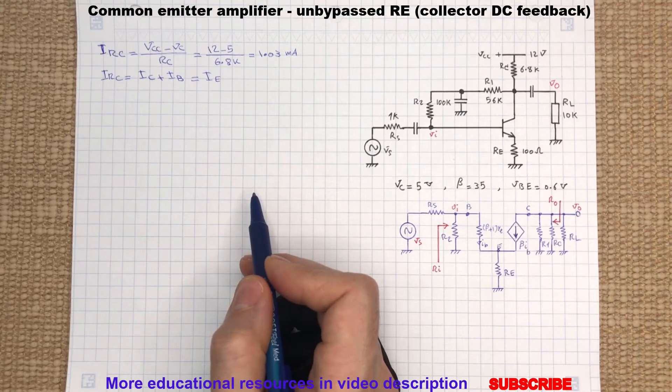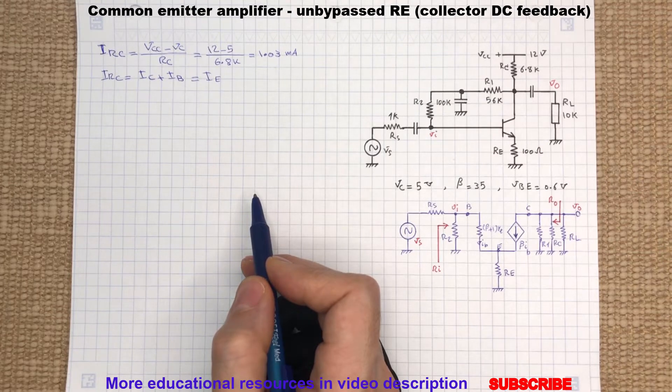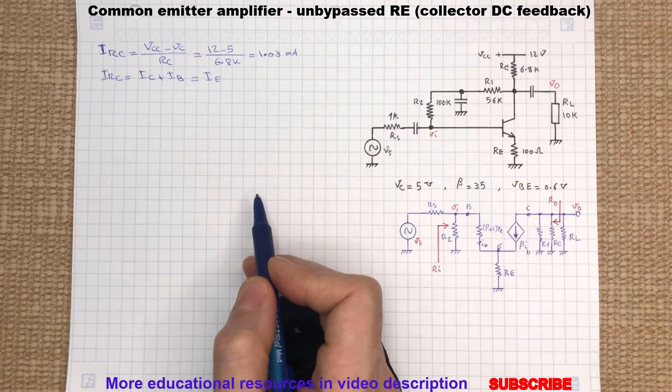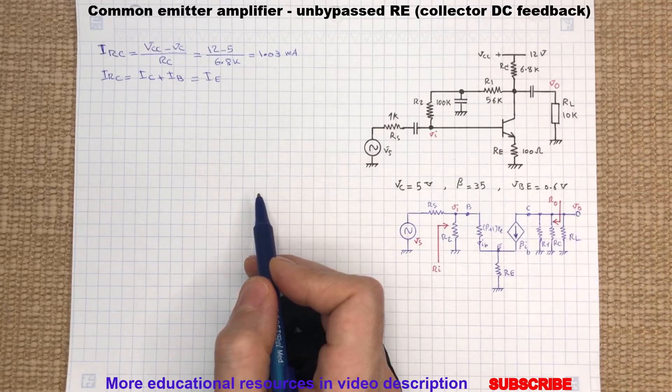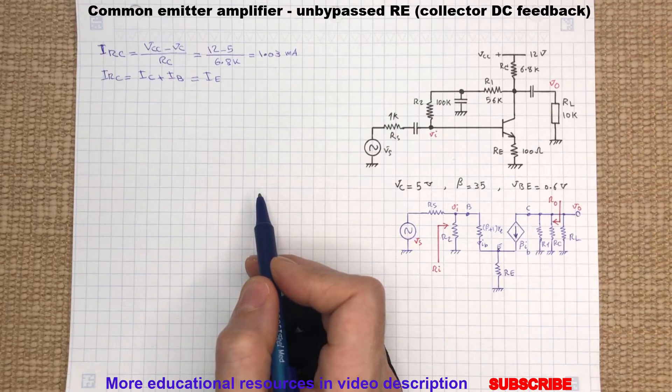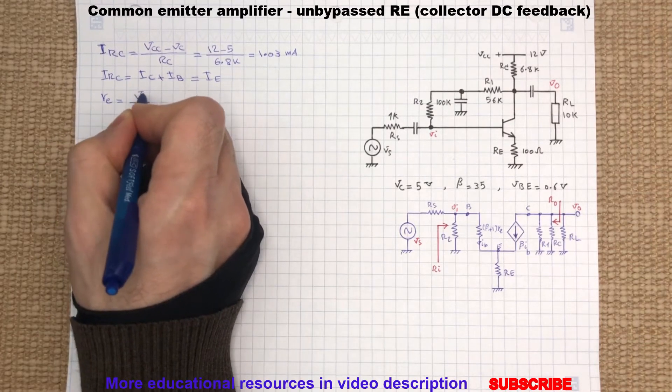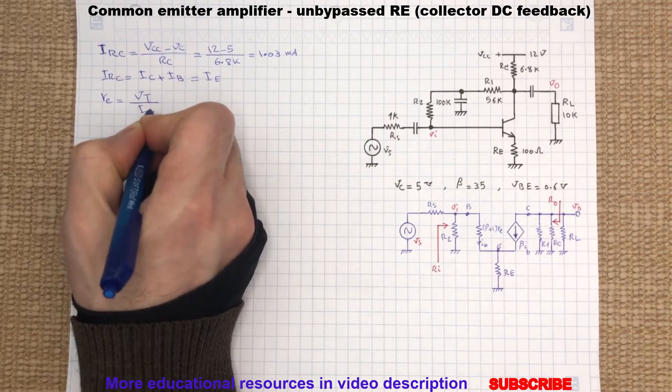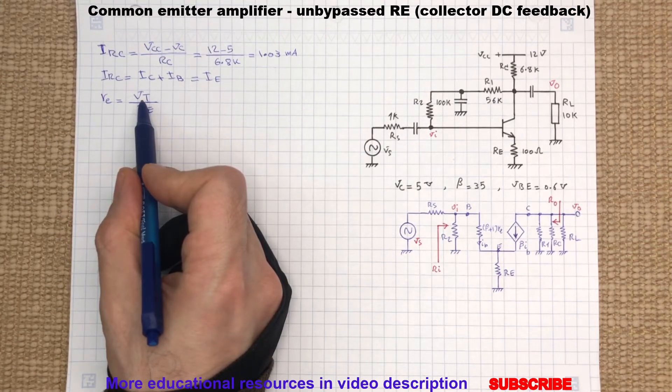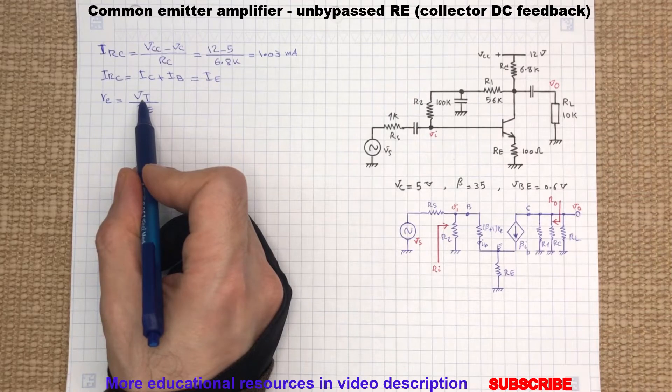Now we can calculate the emitter dynamic resistance by dividing the base emitter junction thermal voltage VT by the emitter current. So we can write the emitter current, where VT is 26 millivolts at room temperature.